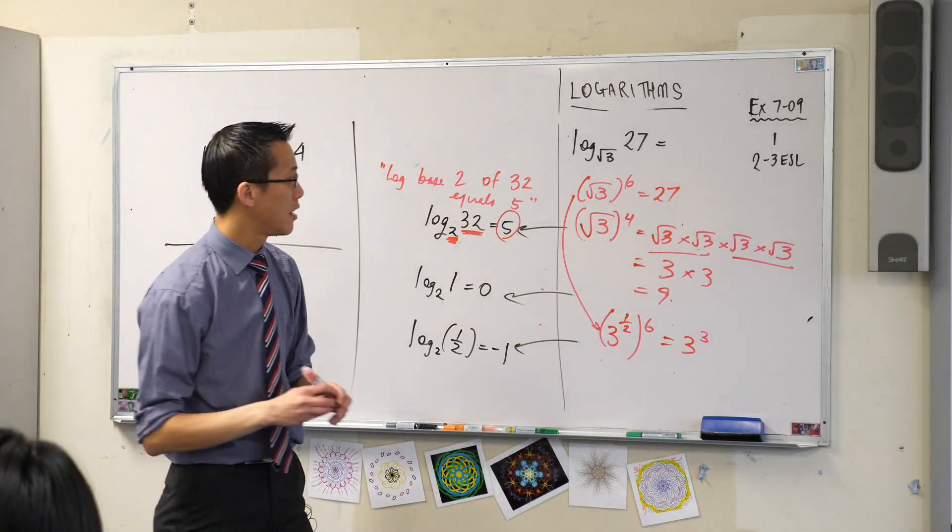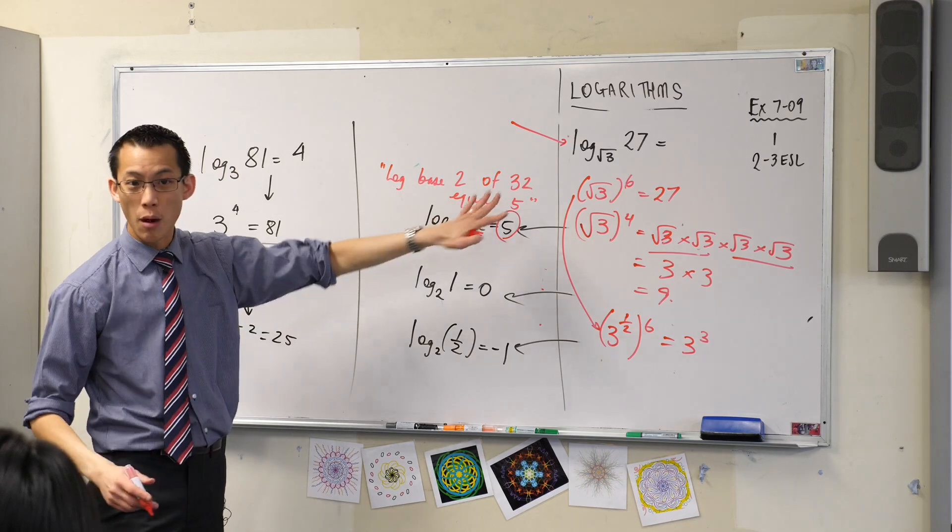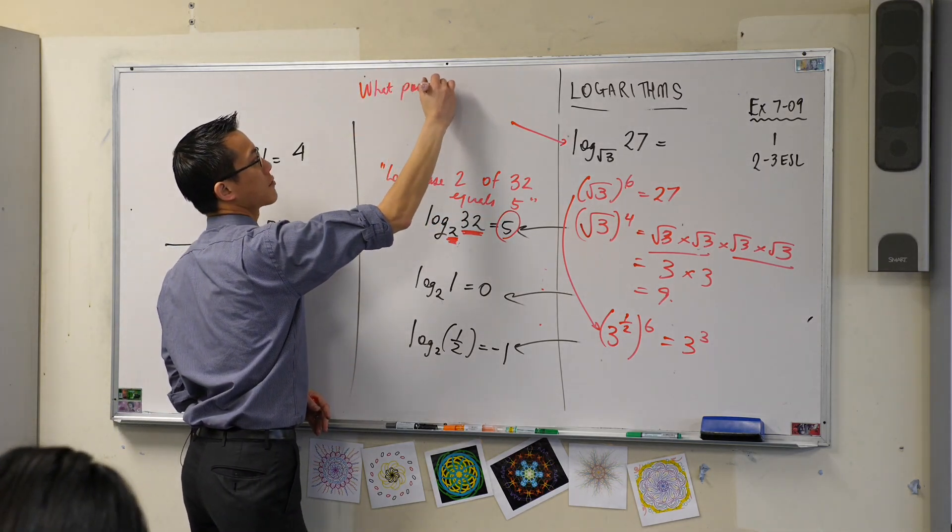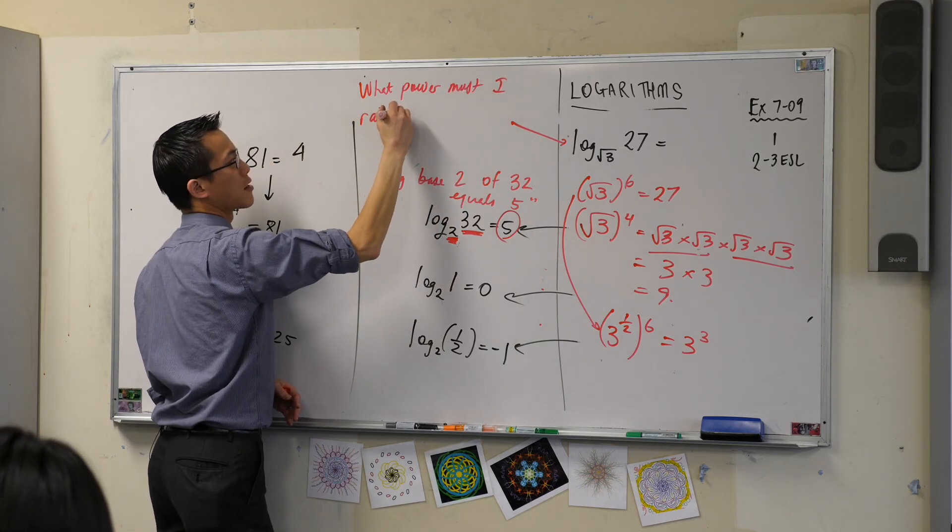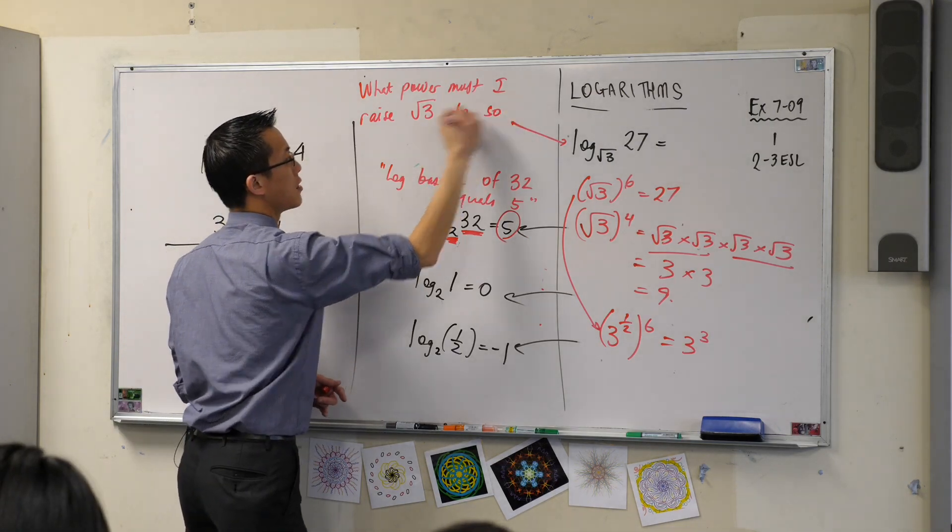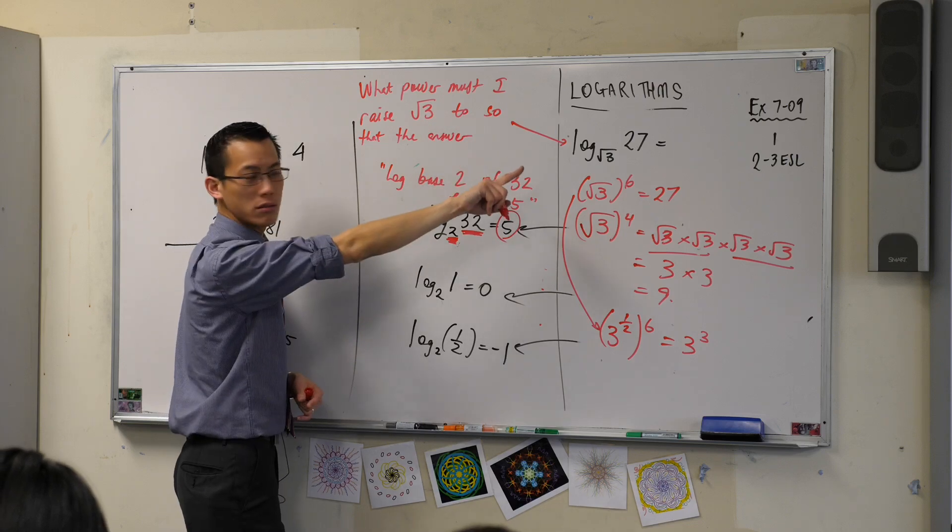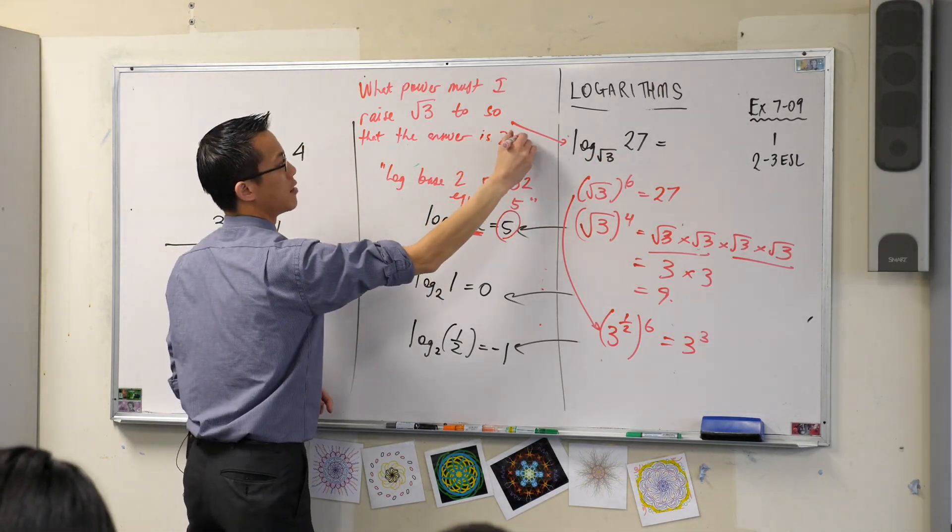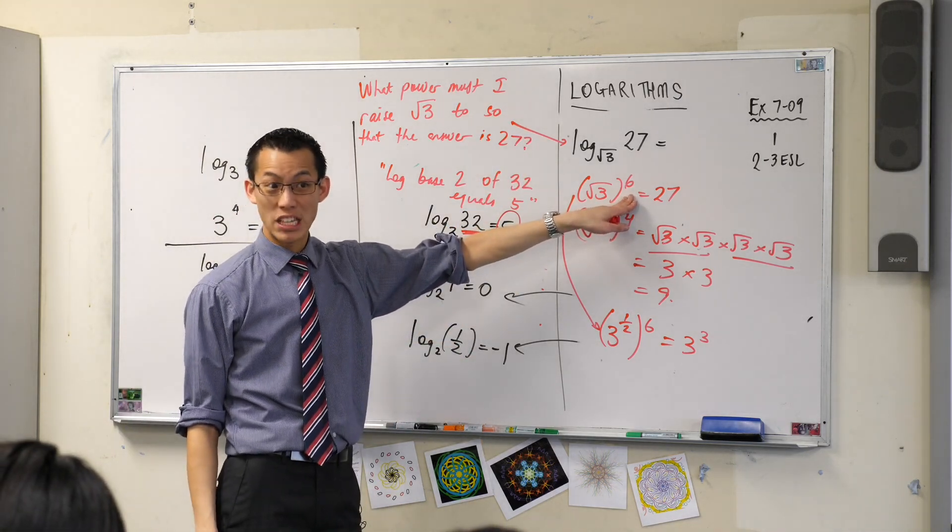So therefore, let me say it again. And in fact, I'll even write it. I'll even write it and maybe you want to write it as well because such a helpful lens for looking at this. What power must I raise, bless you, root 3 to, so that the answer is what? Have a look. I want, I want 27, right? Question mark. And we've just found out the power that we want is 6.